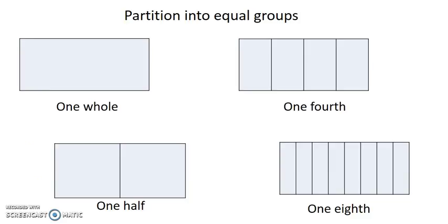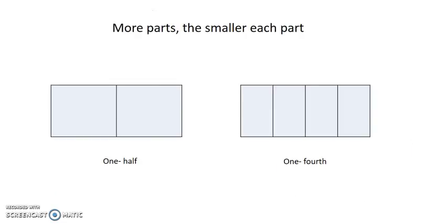When we partition a whole object into equal parts, the parts have special names based on the total number of parts in which the object has been partitioned. Notice that the more fractional parts used to make a whole, the smaller the part. When you partition into four parts, each part is smaller than when you partition into two parts. So one fourth is smaller than one half.